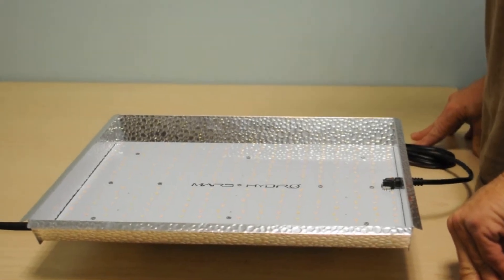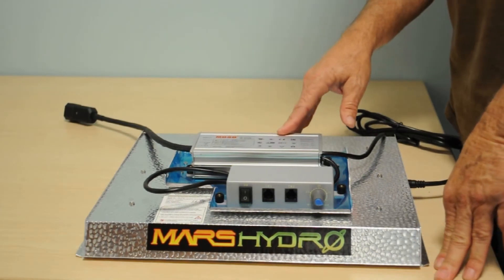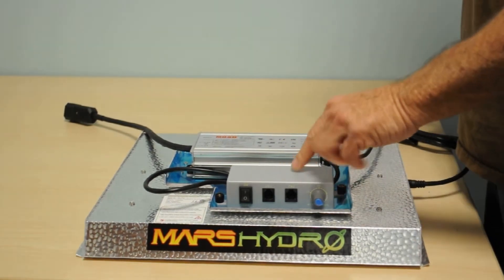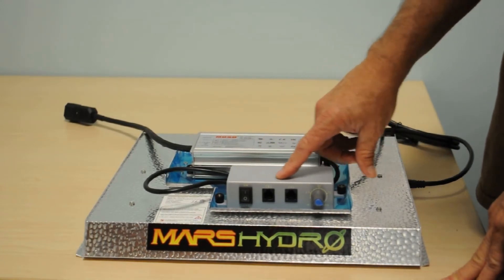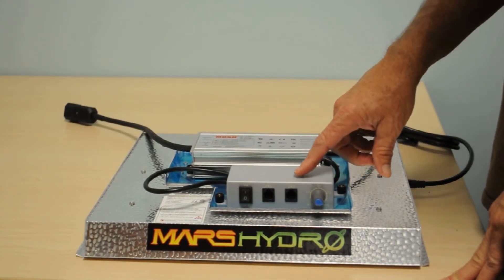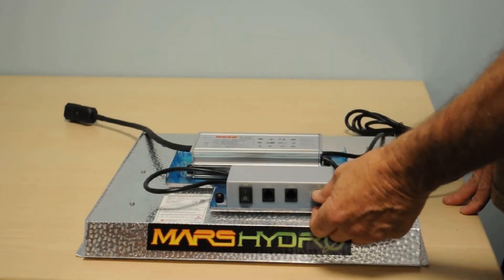On the flip side here we can see the MOSO driver. There's also a new configuration with the power supply. We have an on and off switch, the two connectors here for the daisy chain so if you have more than one light you can hook the lights together, and the all-important dimmer switch.